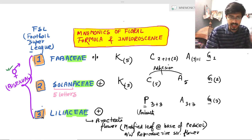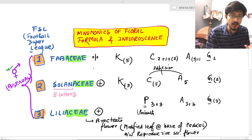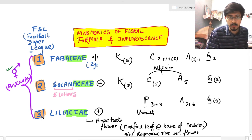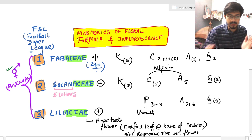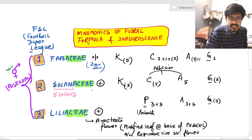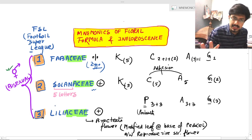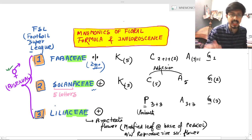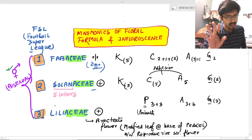In the first one, Fabaceae, we can see the flower is Zygomorphic — bilaterally symmetrical. The second sign is Actinomorphic — radially symmetrical. So Solanaceae and Liliaceae, the second and third families, are radially symmetrical, while the first one, Fabaceae, is Zygomorphic — bilaterally symmetrical.